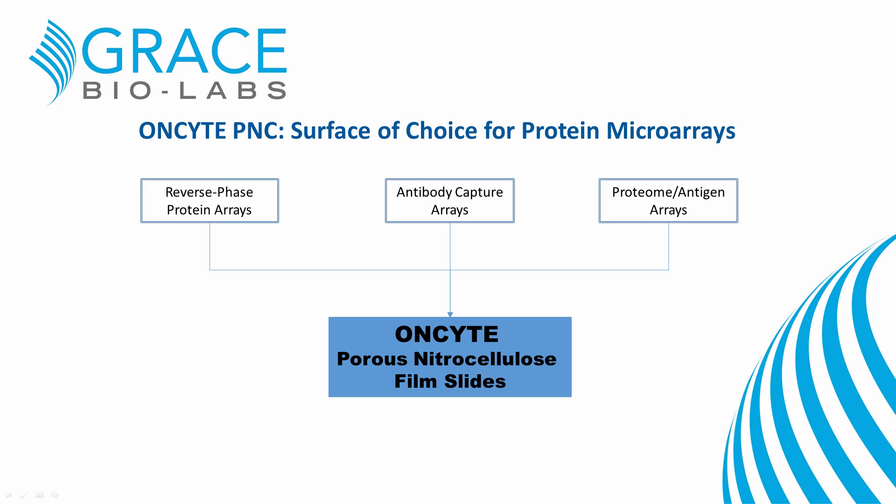Grace BioLabs invented the methods for producing thin-film nitrocellulose slides in the 1980s, and our on-site film slides have become the surface of choice for many protein array applications, a great example being reverse-phase protein arrays. For simplicity in today's discussion, I will refer to porous nitrocellulose film slides as on-site PNC.